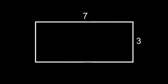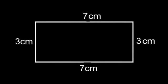Let's give our rectangle some dimensions. Let's say it's seven centimetres by three centimetres. If one side is seven centimetres long, it means the opposite side is also seven centimetres long. If one side is three centimetres long, the opposite side is also three centimetres long.